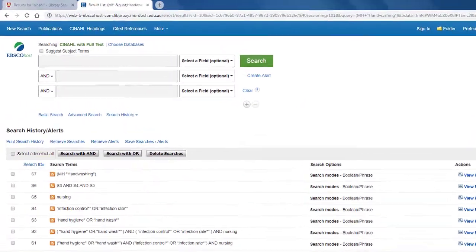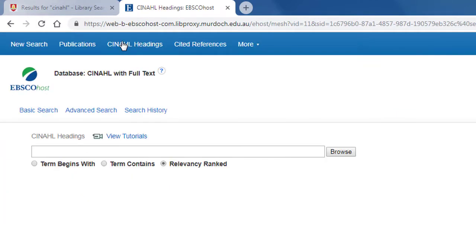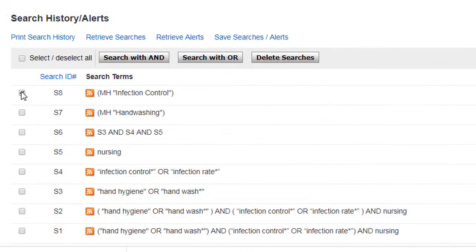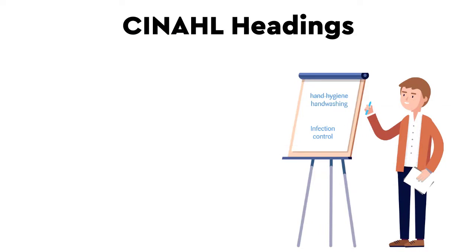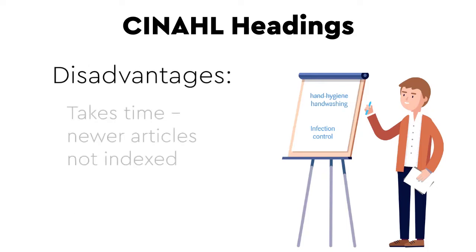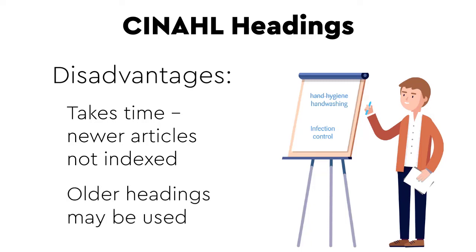Next, I will go back to CINAHL headings and look for infection control. Subject headings can be more precise and produce better results. However, it takes time for articles to be read manually and for headings to be assigned. In addition, the headings are revised every few years and older articles may use older versions of the headings. Because of this, you could potentially miss relevant articles if you only search using CINAHL headings.